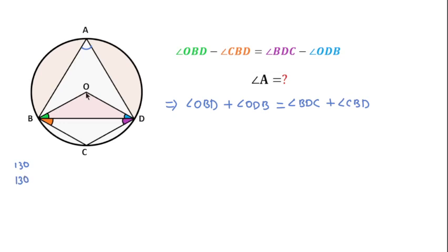This means the two pairs of angles must be equal. So I will consider this angle as 2α, then this other angle should also be 2α. According to the properties of a circle, the angle made on the same segment is half of the angle made at the center, so this angle should be α.